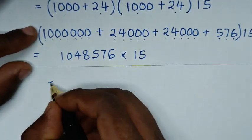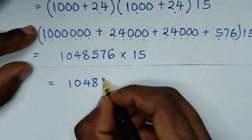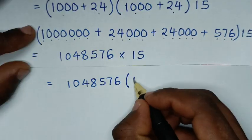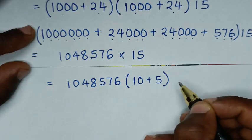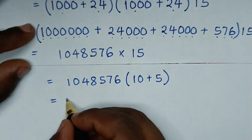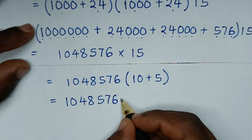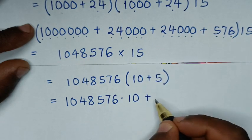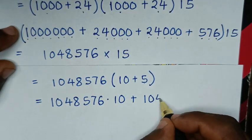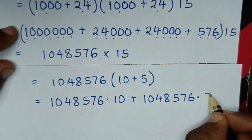In the next step, 1,048,576 times 15 is the same as 1,048,576 times bracket 10 plus 5. So it will be equal to 1,048,576 times 10, plus 1,048,576 times 5.